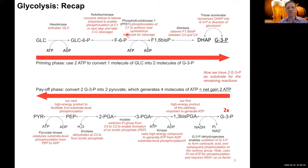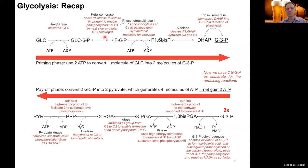Our next step was an isomerization from glucose-6-phosphate to fructose-6-phosphate — moving from an aldose to a ketose. Glucose-6-phosphate is an aldose; fructose-6-phosphate is the corresponding ketose. We moved the carbonyl function from C1 to C2. The reason wasn't immediately clear — this reaction doesn't release energy — but as we move forward in glycolysis, this isomerization was critical to facilitate the next reactions.